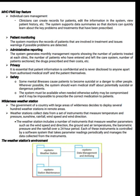Wilderness weather station: the government of a country with a large area of wilderness decides to deploy several hundred weather stations in remote areas. Weather stations collect data from a set of instruments that measure temperature, pressure, sunshine, rainfall, wind speed, and wind direction. The weather station includes a number of instruments measuring weather parameters such as wind speed and direction, ground and air temperatures, barometric pressure, and rainfall over a 24-hour period. Each of these instruments is controlled by a software system that takes parameter readings periodically and manages the data collected from the instruments.